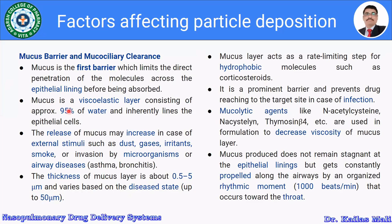The mucous layer acts as a rate-limiting barrier for hydrophobic molecules such as corticosteroids, since mucous contains 95% water and is hydrophilic in nature. It is a prominent barrier that prevents drug from reaching the target site. In case of infection, mucous secretion is increased, thereby restricting the absorption of drug at the target site. Mucolytic agents like N-acetylcysteine and thymosine beta-4 are used in formulations to decrease the viscosity of the mucous layer.